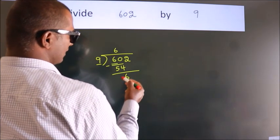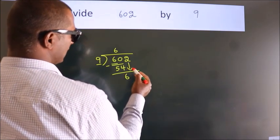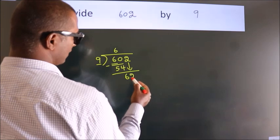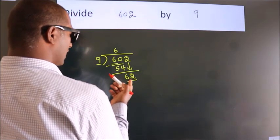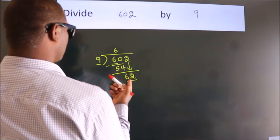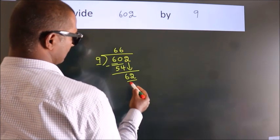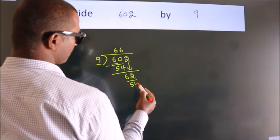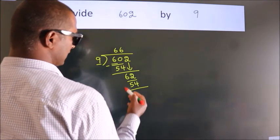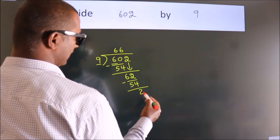After this, bring down the beside number. So, 2 down. So, 62. A number close to 62 in the 9 table is 9×6=54. Now we subtract. We get 8.